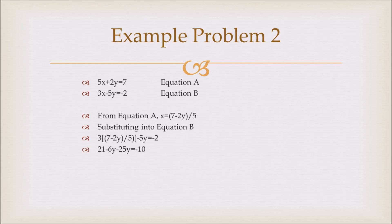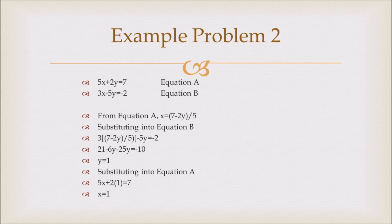And then when you simplify it, you get 21 - 6y - 25y = -10, and therefore y = 1. Now you can substitute this back into equation A, and you get 5x + 2(1) = 7, which gives x = 1. Therefore x = 1 and y = 1.